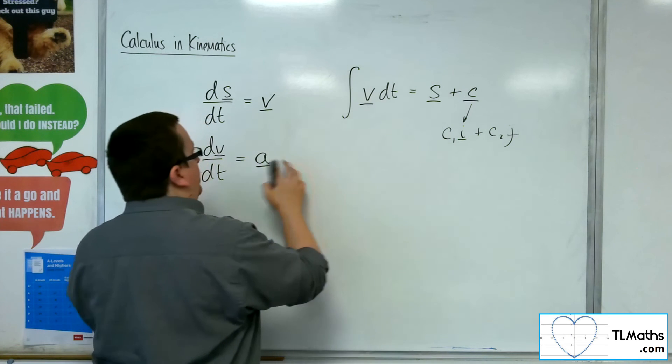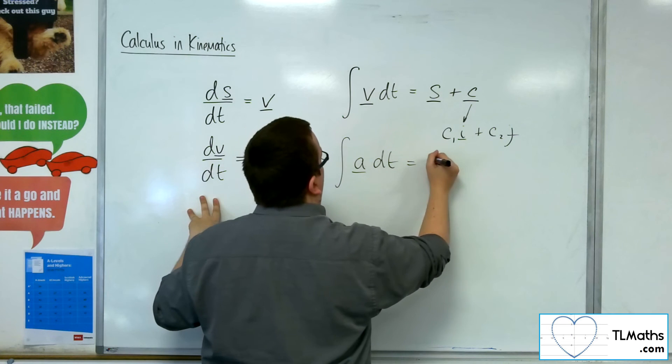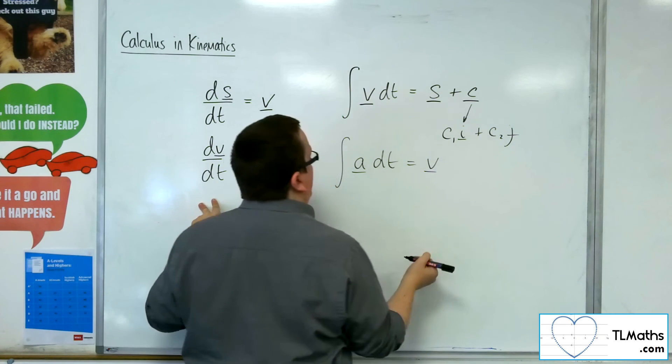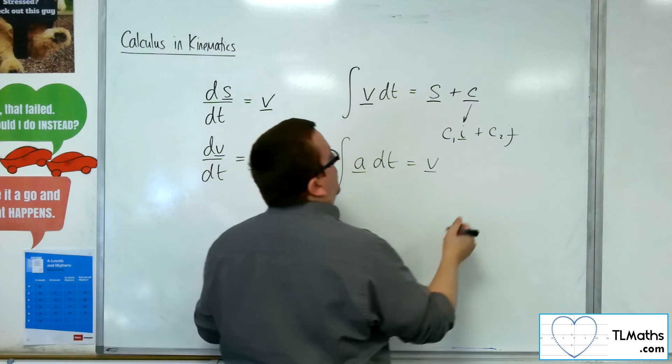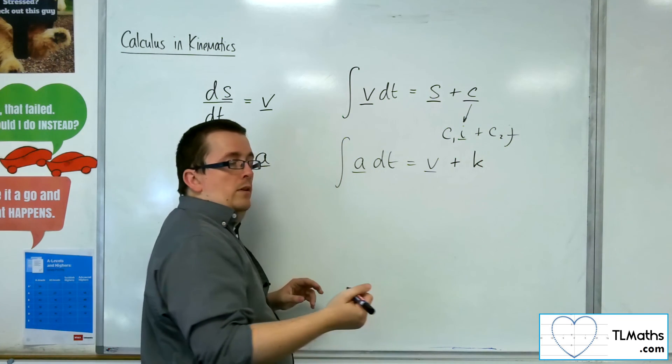And then, of course, in a similar way, if we integrate the acceleration, then we're going to get the velocity. And in doing so, we may want to set up a separate constant, let's say k.